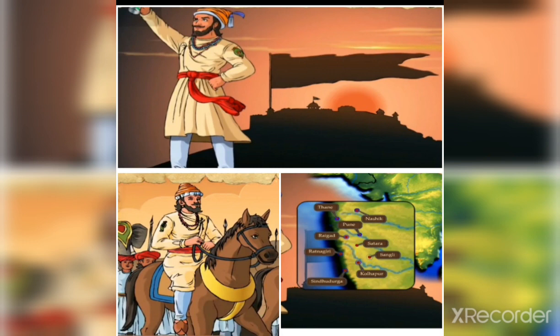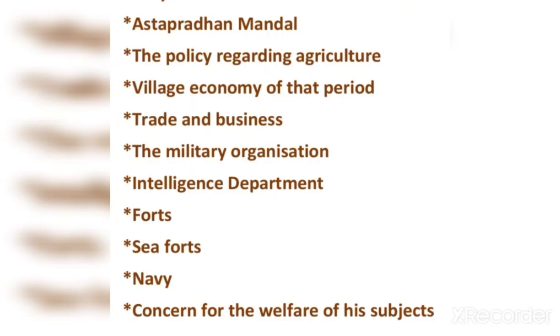To ensure the smooth management of the affairs of the Swaraj and to ensure people's welfare, Shivaji Maharaj set up an efficient administration. In this chapter we shall get some information about his administration. We are going to learn about the Ashtapradhan Mandal, the policy regarding agriculture, village economy, trade and business, the military organization, intelligence department, forts, sea forts, navy, and concern for the welfare of his subjects.